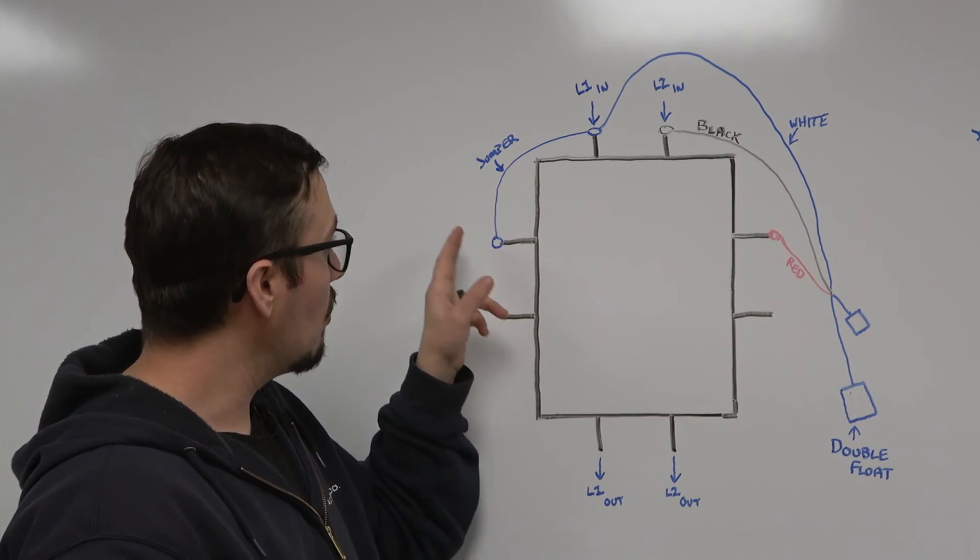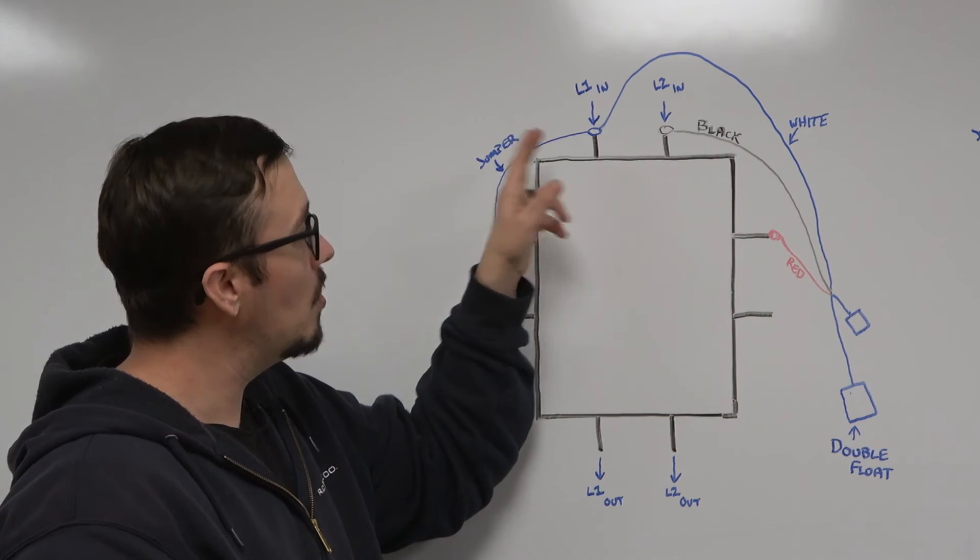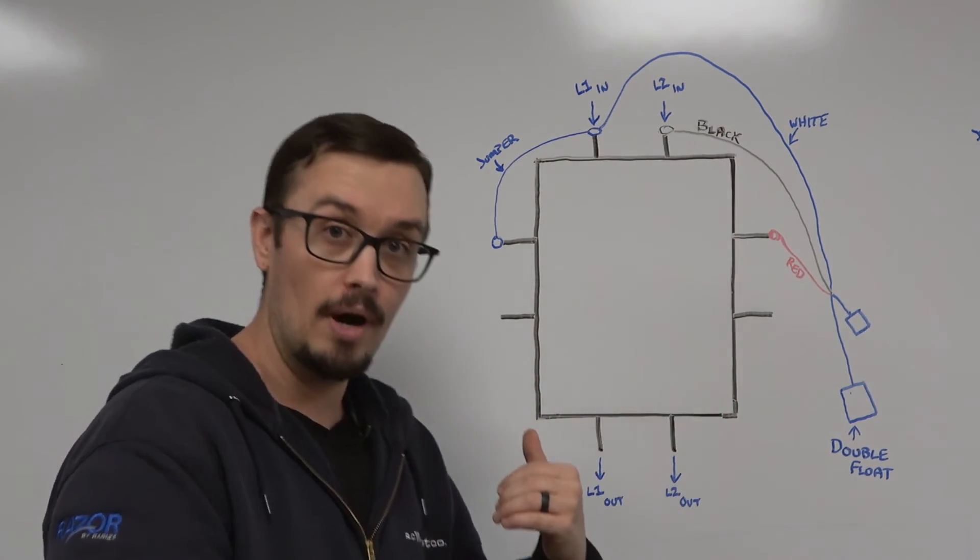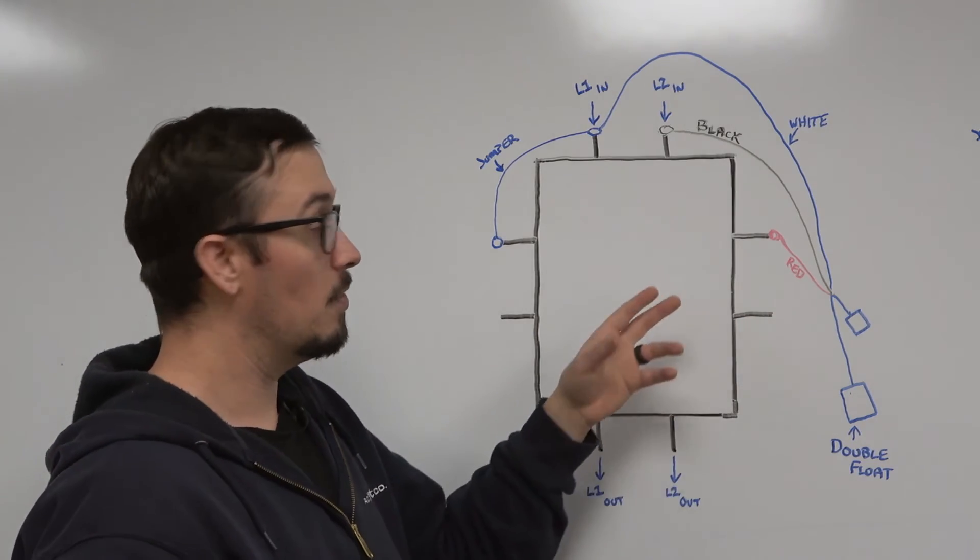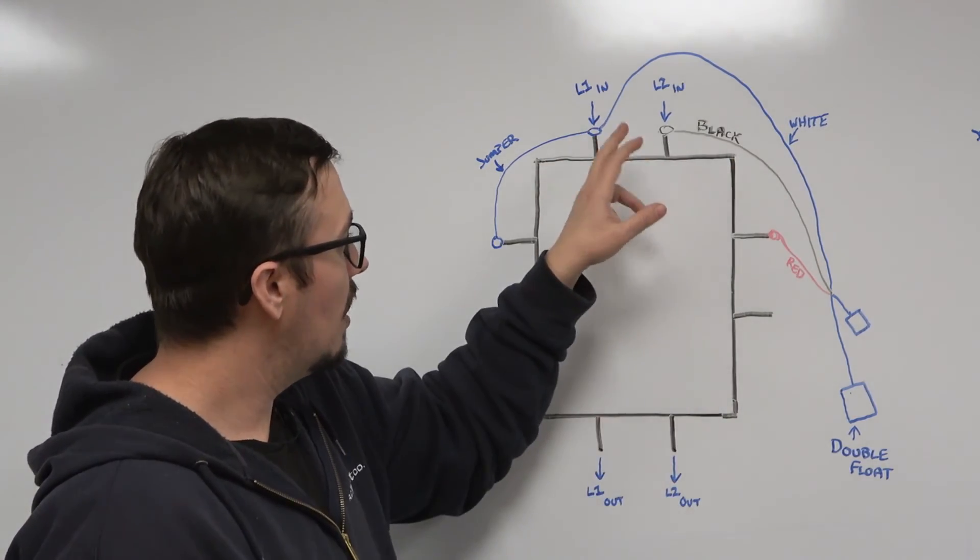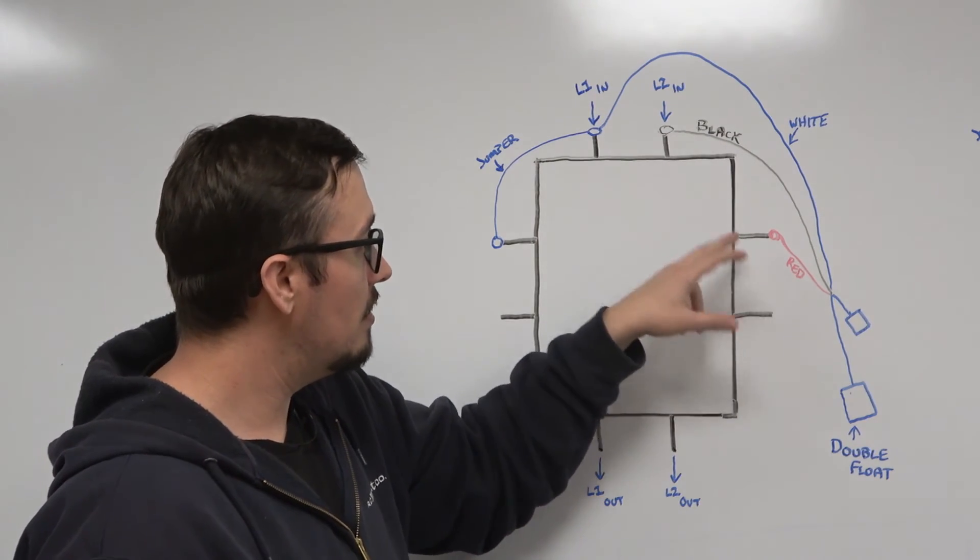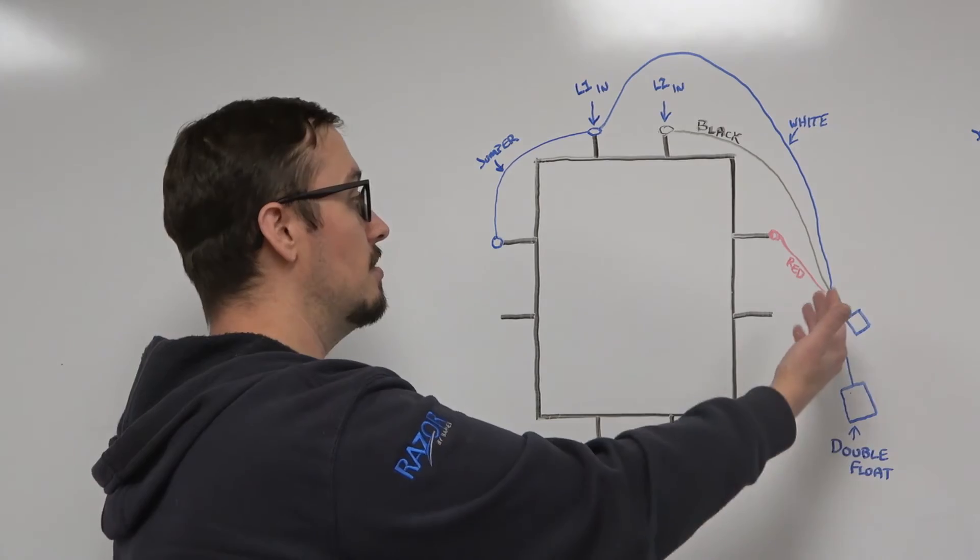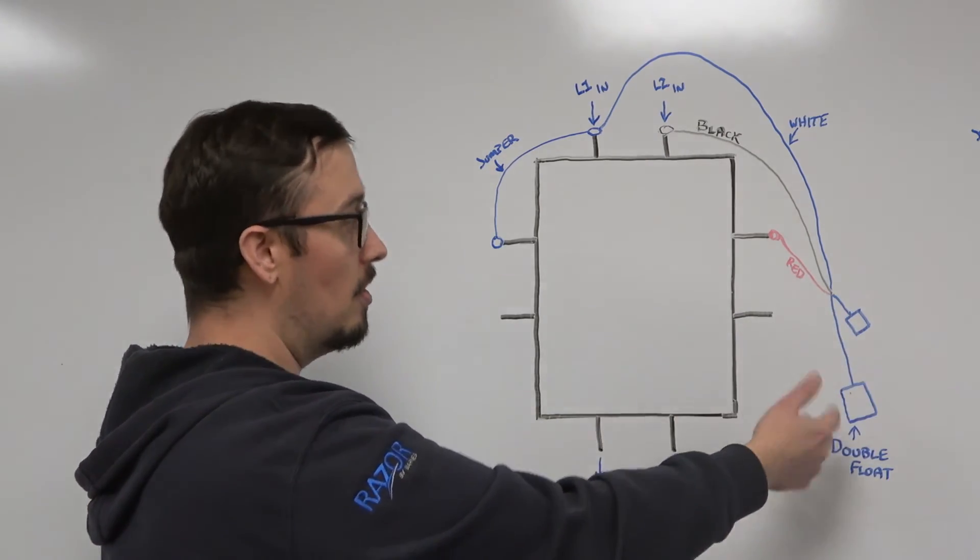In this configuration it's a little bit different. We're jumpering our coil over to L1, but we're also jumpering our white wire, which is the coil wire or the power wire essentially for the coil in the relay. Then we've got our black and our red jumper between, so it goes through the float switches.